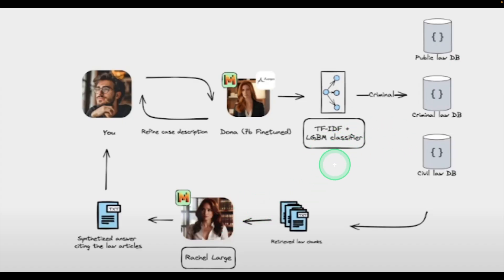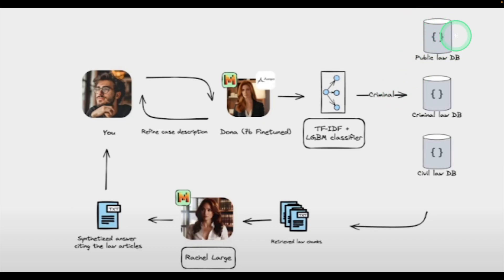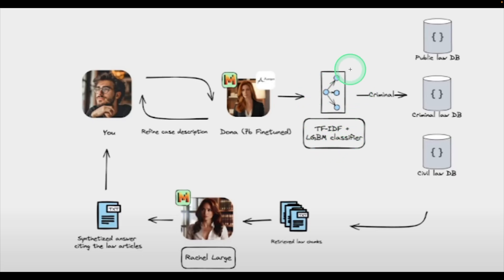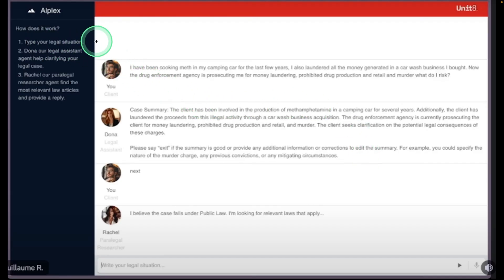Here is the diagram for Alplex. When you ask a question about a law document, it uses meta-prompting — formatting the prompt and sending it to a classifier. Based on what type of law it is, if it's criminal law it goes to the criminal database, if it's public law it goes to the public law database, if it's civil law it goes to the civil law database. Accordingly, it retrieves relevant documents and uses another model to summarize the text and deliver it to the user. They found that this classifier improves performance compared to other fine-tuned models.